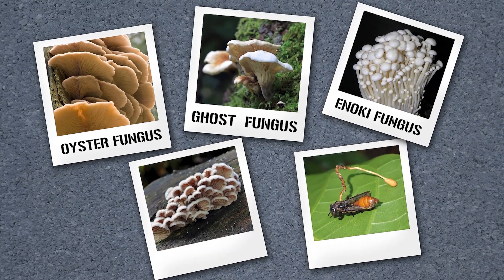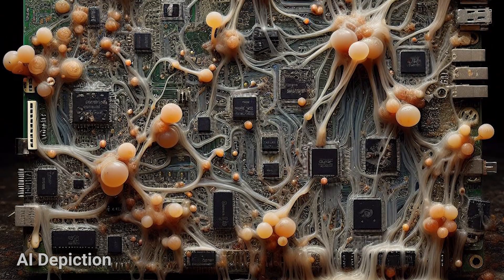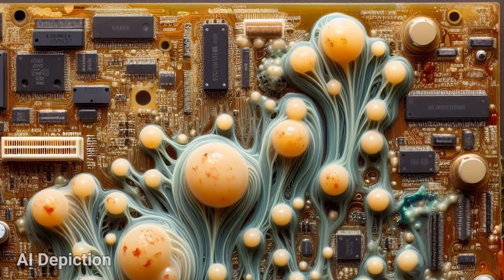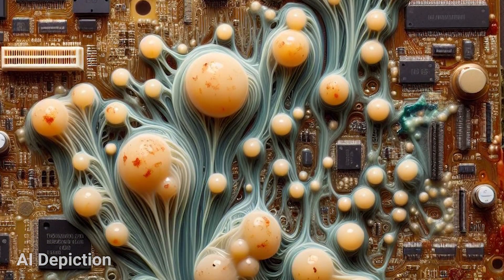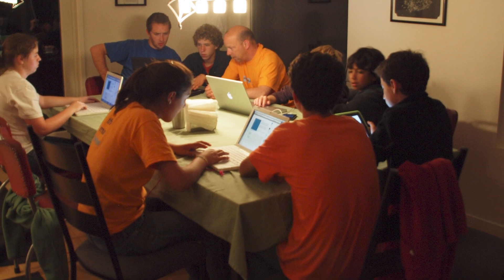Among the more recognizable members of Basidiomycota are the oyster fungus, the ghost fungus, the enoki fungus, the split gill fungus, and the cordyceps fungus — yes, that's the cordyceps of The Last of Us fame. They also appeared to be ideal candidates to form part of a computer: they transmitted information via electrical activity, could run computations across their networks, and their fruiting bodies formed an interface, responding to stimulation with electrical signals similar to those in plants.